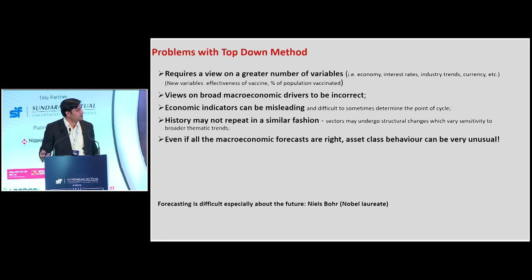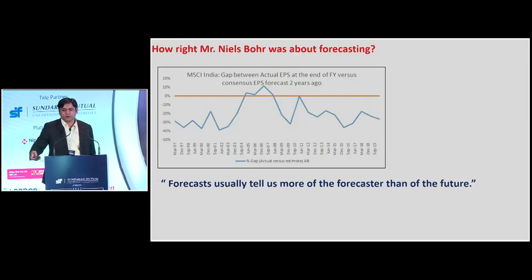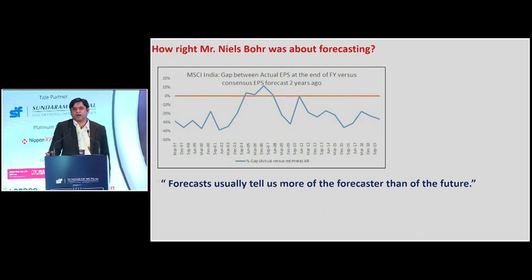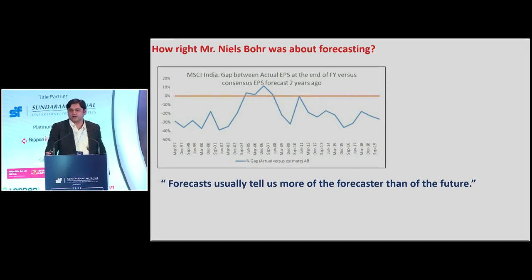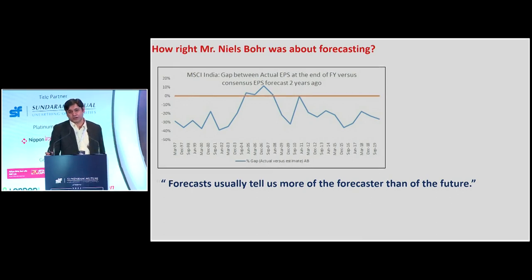This very simple chart, up till December 2019, shows what industry analysts think of index EPS forecasts two years down the line versus the actual reality. You can see most of us have this optimism bias, and hardly our forecasts are right — they either overshoot or they undershoot. So I think macro-based asset allocation, while it may look very intuitive, to my mind it is very, very difficult.